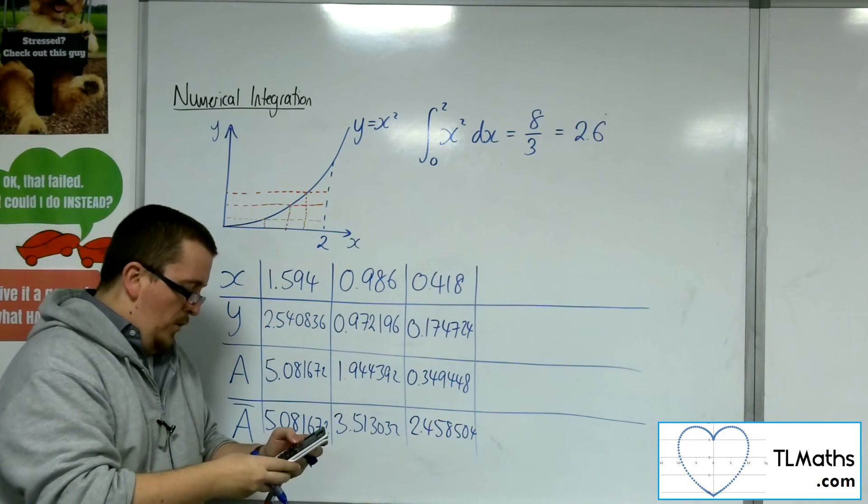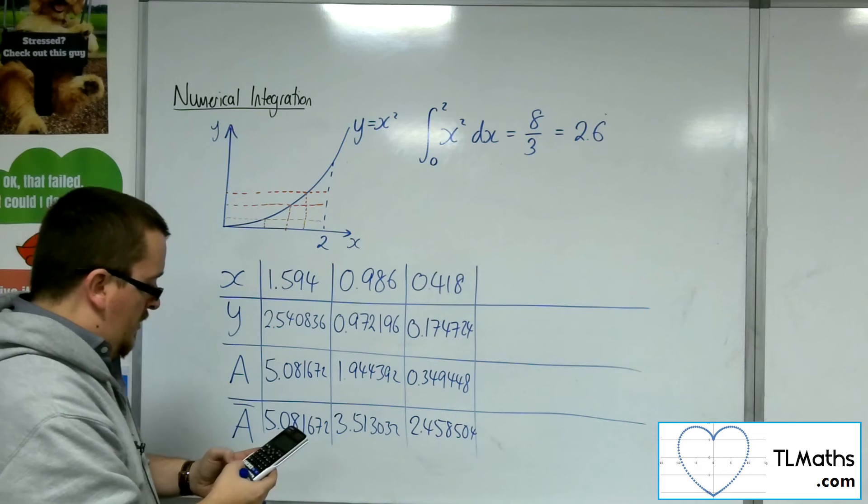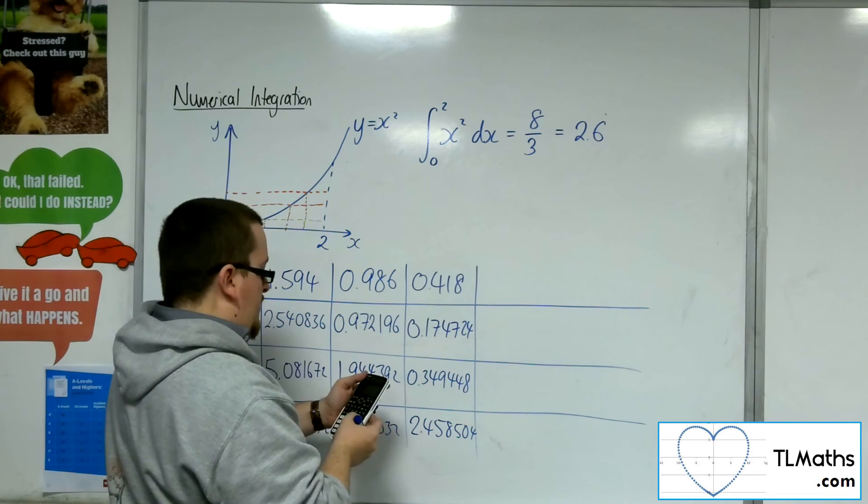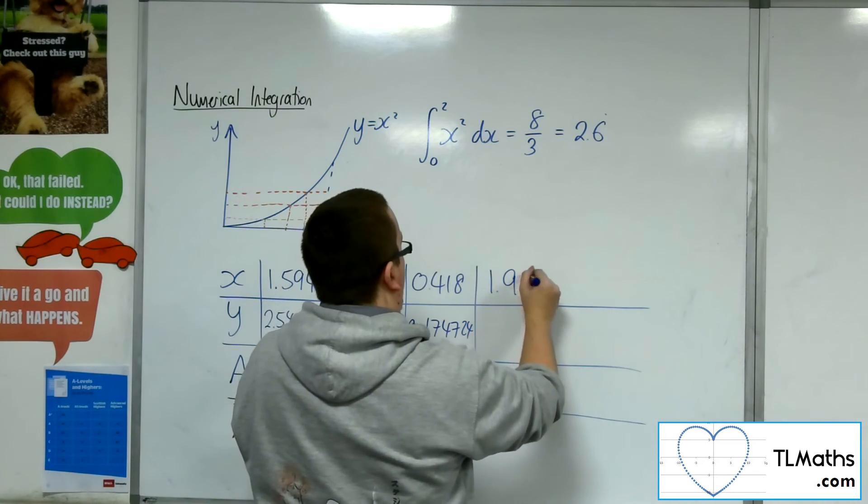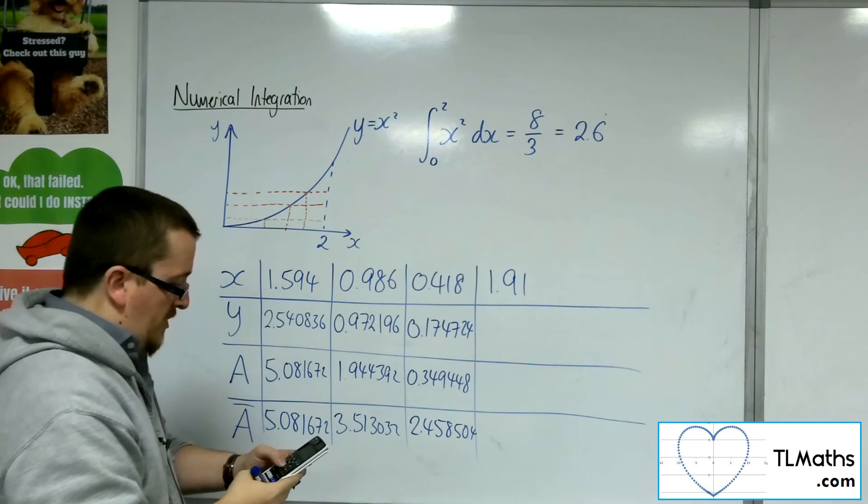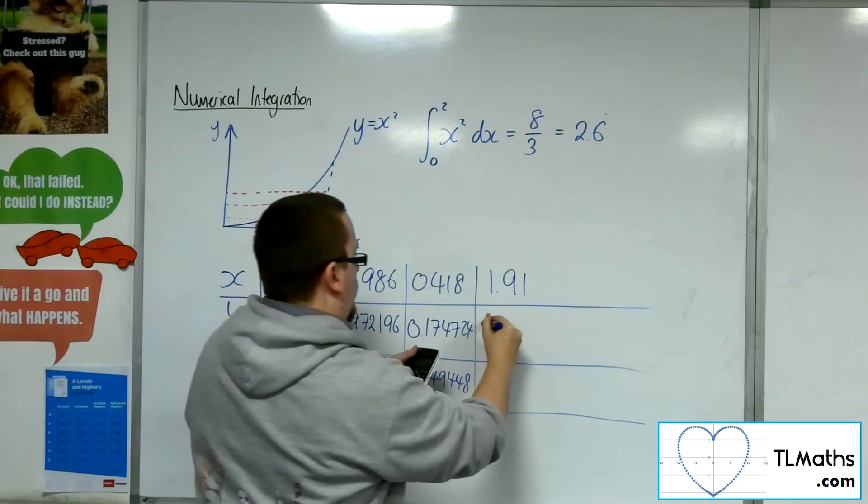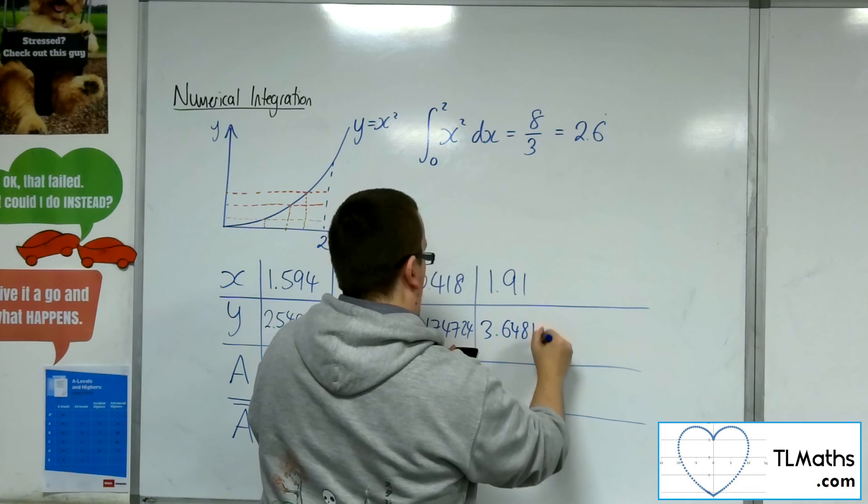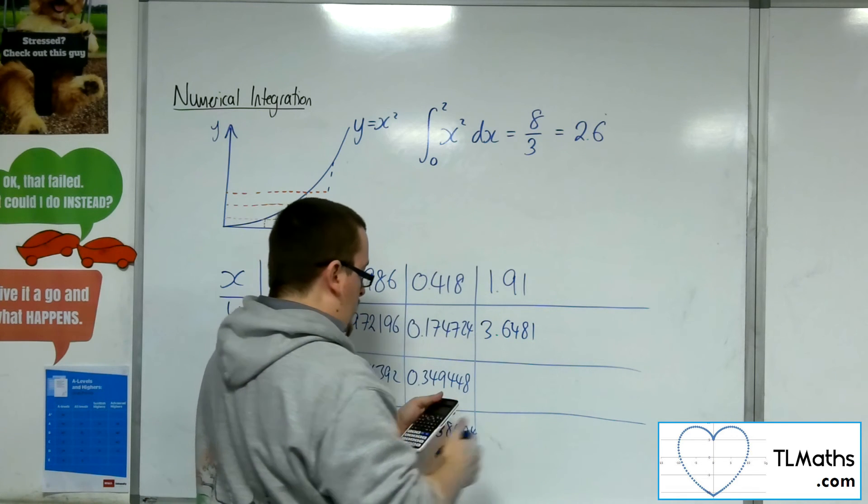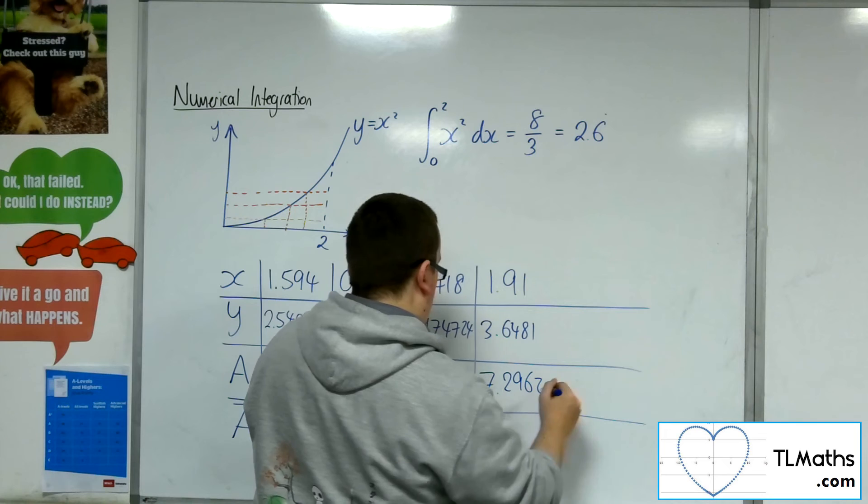Let's just try one more. Random number times by 2. This time I'm getting 1.91. Square that, 3.6481. Times that by 2, 7.2962.